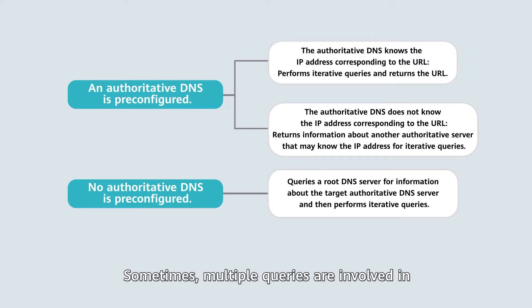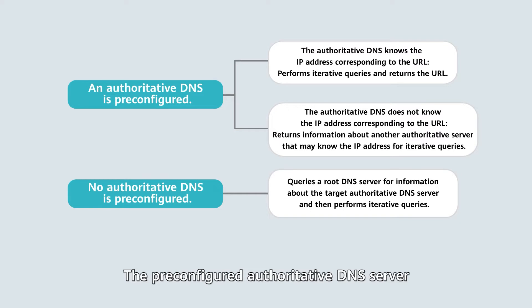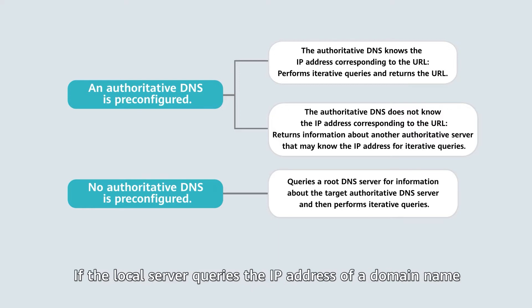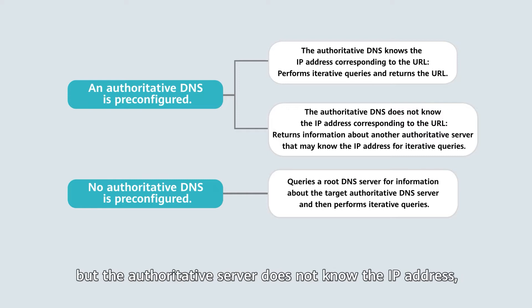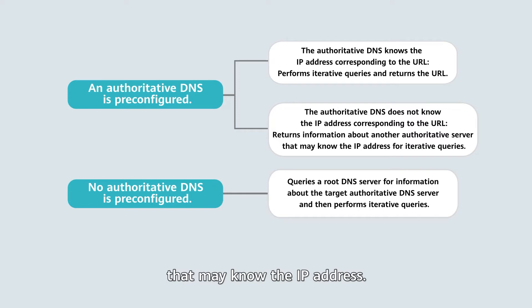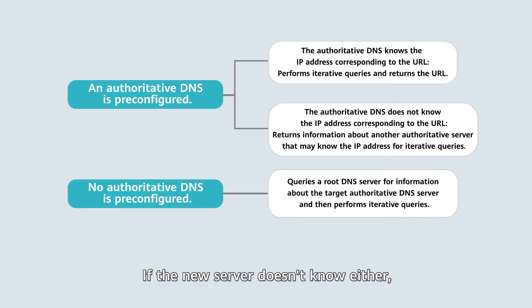Sometimes multiple queries are involved in obtaining the desired IP address. The pre-configured authoritative DNS server is responsible for responding to the local DNS server. If the local server queries the IP address of a domain name but the authoritative server does not know the IP address, the authoritative server retains information about another authoritative server that may know the IP address. The local DNS server then queries this new server, and if the new server doesn't know either, this process repeats until the local DNS server obtains the IP address.